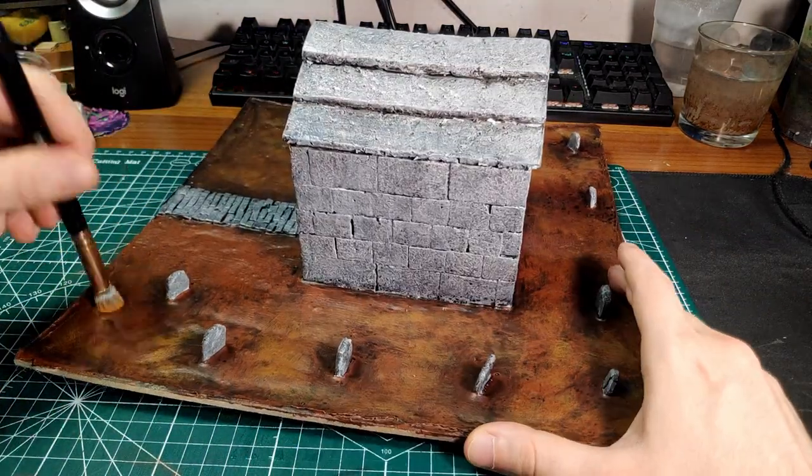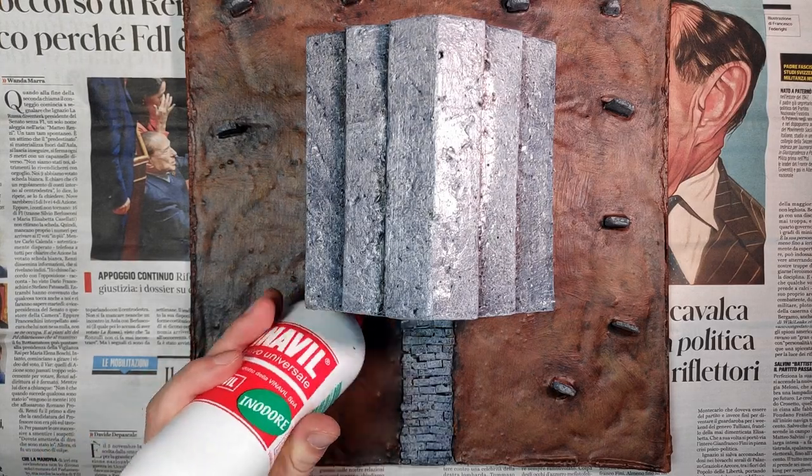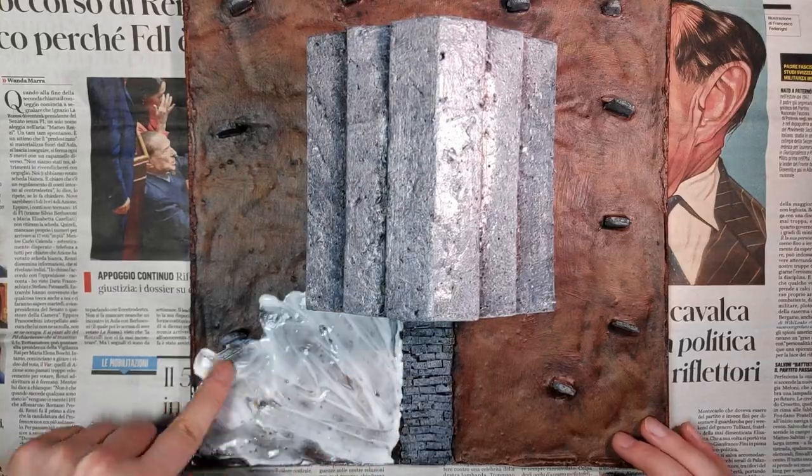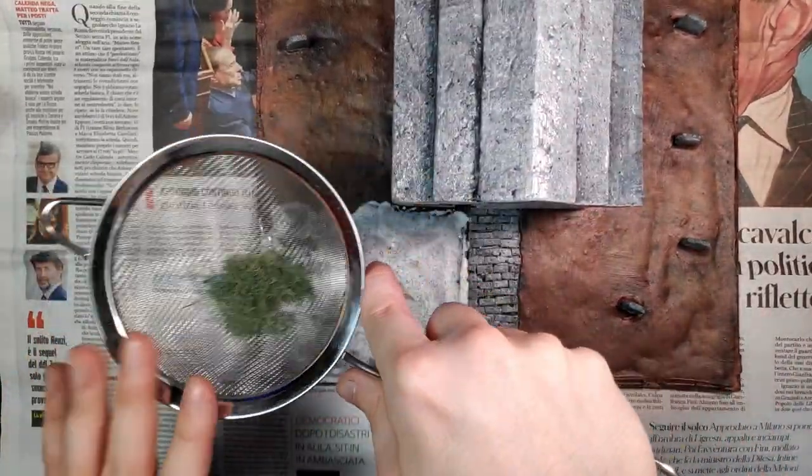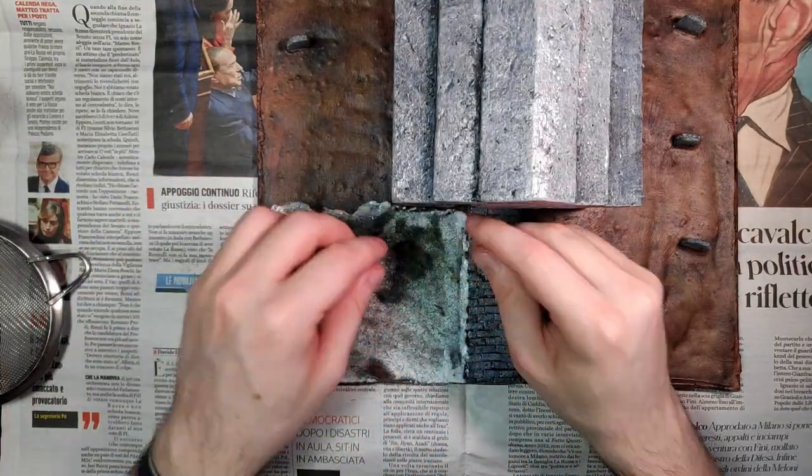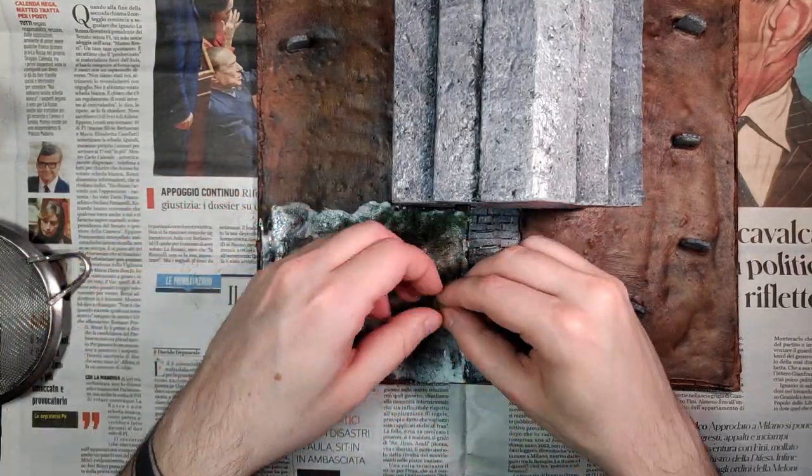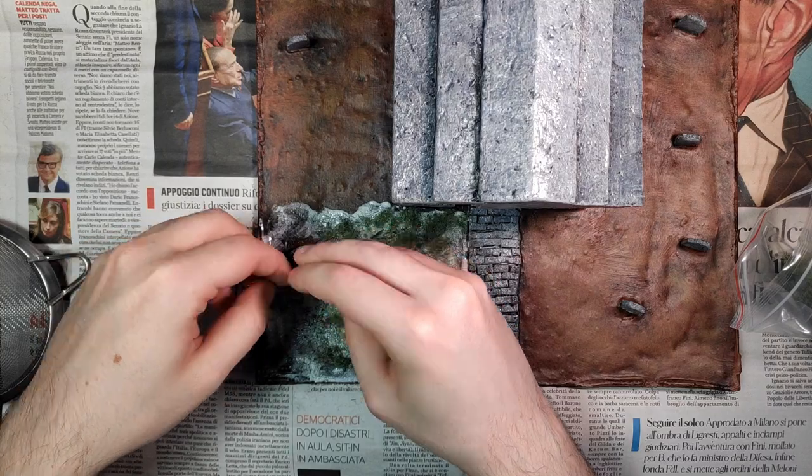After that the paint job is done and all we have left is to add some grass to this. For this build I'm going for a more patchy grass. So after sprinkling a base layer of grass, covering everything, I'm just going to put some bigger chunks here and there.